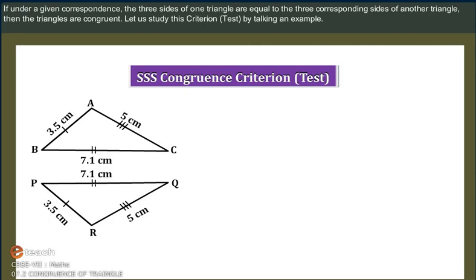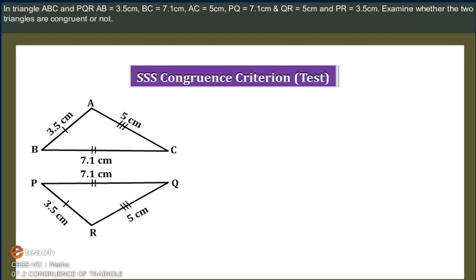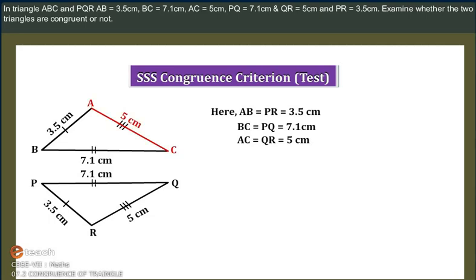Let us study this Criterion Test by taking an example. In Triangle ABC and Triangle PQR, examine whether the two triangles are congruent or not.